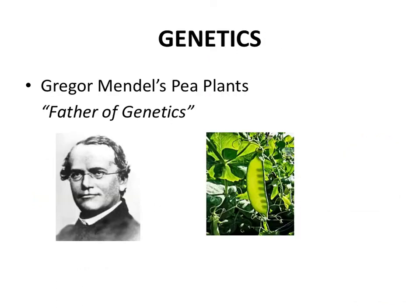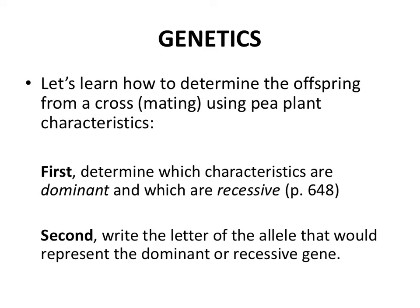We're going to use pea plants as a model or introduction for simple genetic inheritance. This is Gregor Mendel, referred to as the father of genetics. He happened to be an individual who was also a gardener, and he started noticing these really predictable and steady patterns when he would cross-pollinate pea plants with slightly different characteristics. We'll come back to the pea plants in a minute, but first some reminders of how we're going to use this information to determine offspring if we know a little bit about the parents.